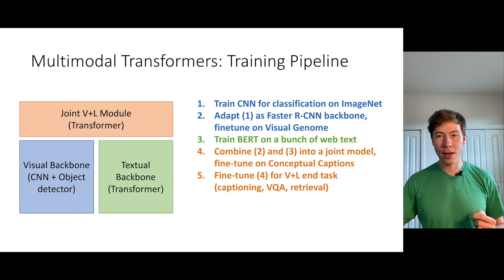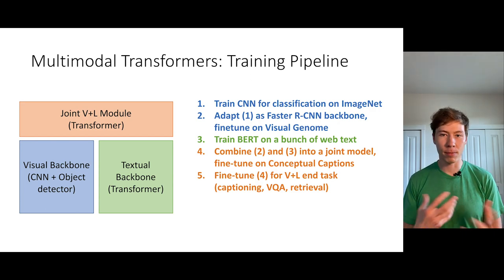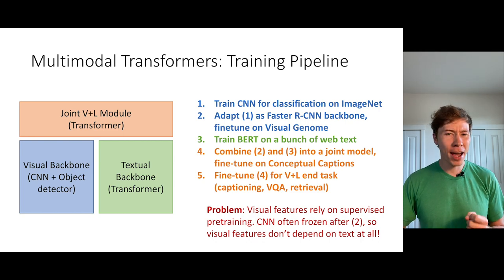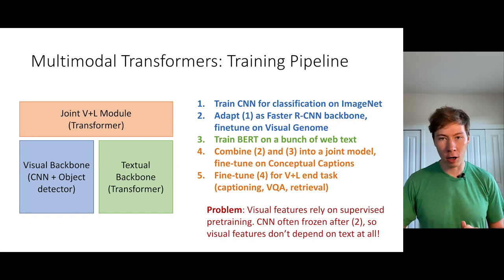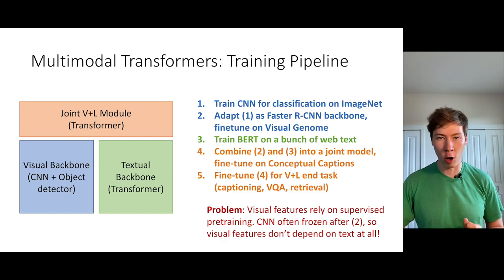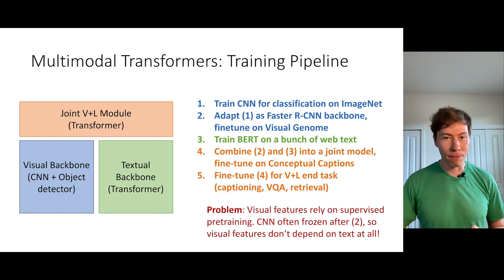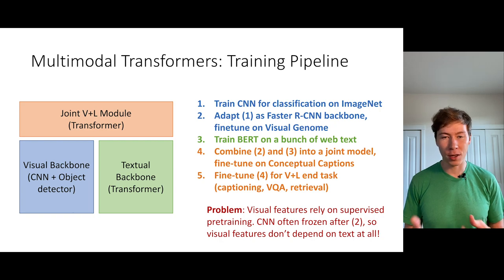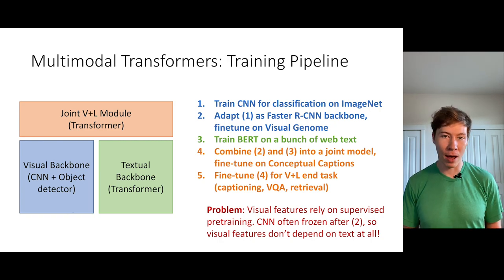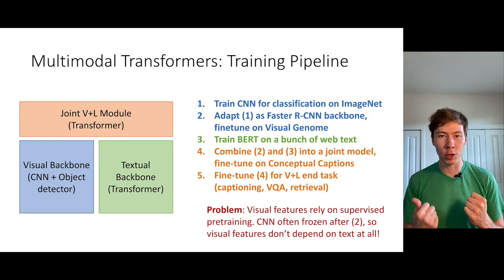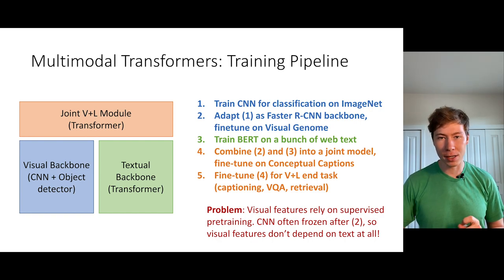Finally, they take that joint model and fine-tune it for some downstream vision-plus-language task. The unsettling part is that this approach relies on visual features that were ultimately learned via supervised pre-training on ImageNet and Visual Genome. Even worse, the CNN is often frozen after step two, so the visual features in the visual backbone are not trained in many cases at all in response to the textual supervision in downstream parts of the training pipeline.